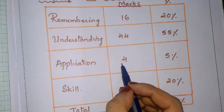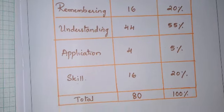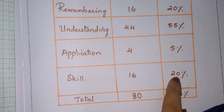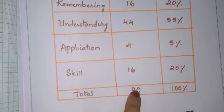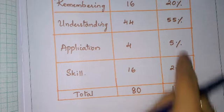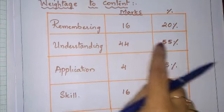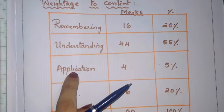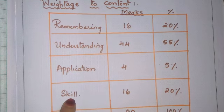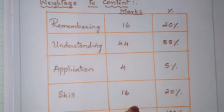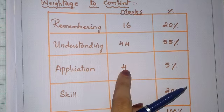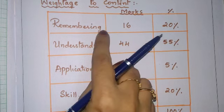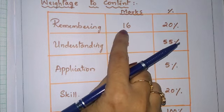Application type questions will be only 5 percent, that is 4 marks. Skill-based questions are 16 marks, that is 20 percent. So out of 80 total marks: 20 percent Remembering, 55 percent Understanding, 5 percent Application, and 20 percent Skill-based questions.